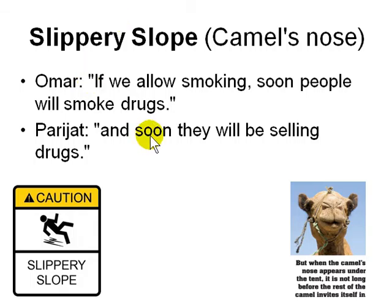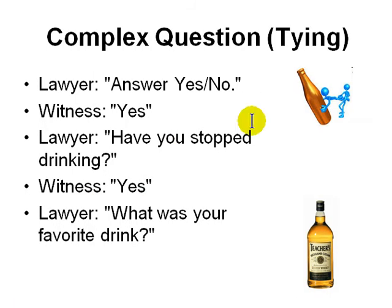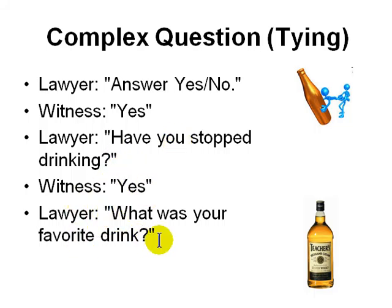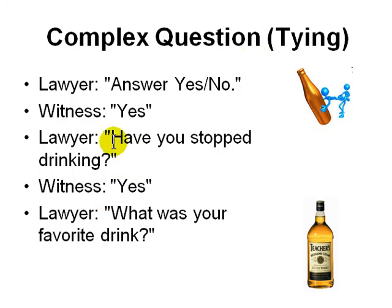Next is the complex question. A lawyer says to a witness, 'Answer yes or no: have you stopped drinking?' This question assumes that the witness was drinking before. If the witness says yes, the lawyer asks 'What was your favourite drink?' The question contains two questions — one is assumed within it. This is called a complex question, and you have to watch out for these kinds of loaded questions.